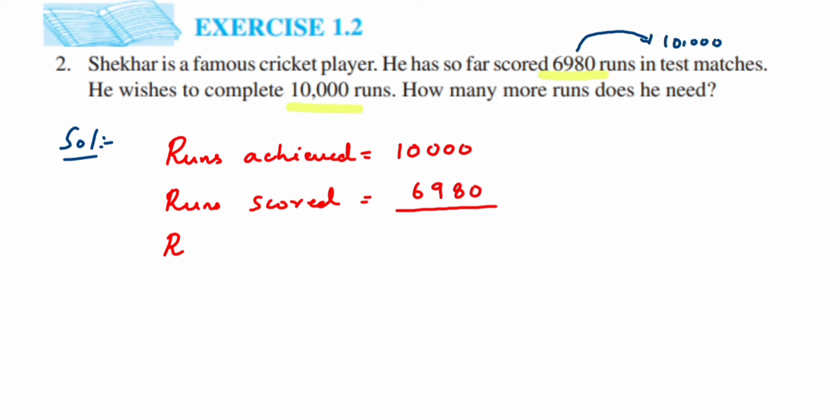So this will be 0, and then this will become 10. 10 minus 8 is 2. This is 9, this is also 9, so we'll get 0. And then this is 3. I hope I don't have to explain how we have subtracted—you can subtract by yourself if you know how to do it. So therefore we got 3,020. 3,020 is the more score he required to get 10,000.